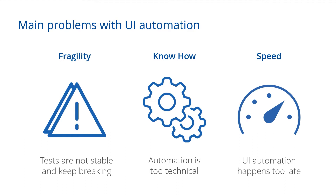The second problem area in UI automation is around know-how — the problem that automation is usually very technical, and it is hard to find enough resources to perform all of the automation that you would need in your organization. Especially, you often have subject matter experts who know exactly what to do, but as they lack the know-how on the technology side, they are just incapable of creating the automation.